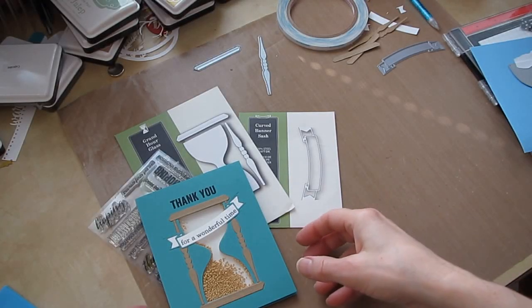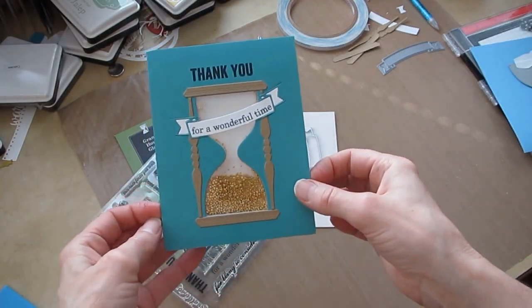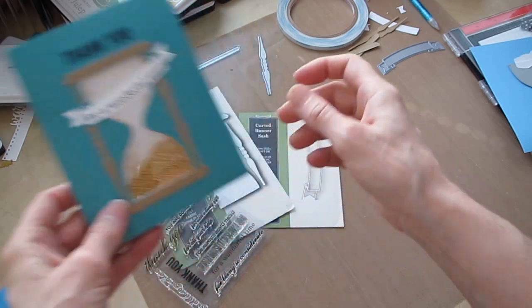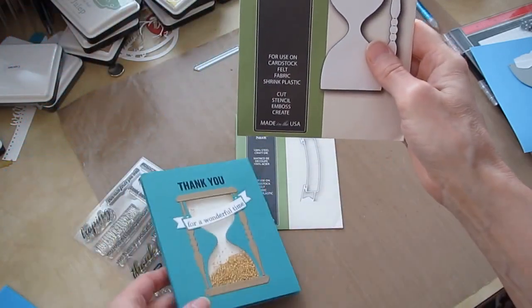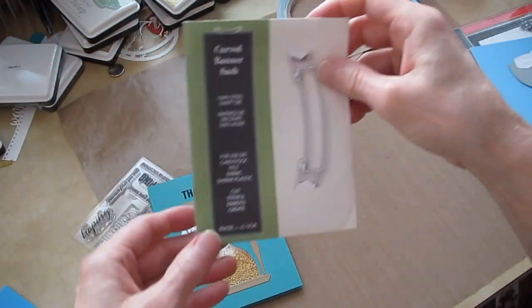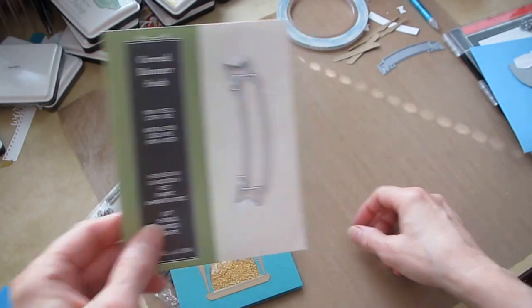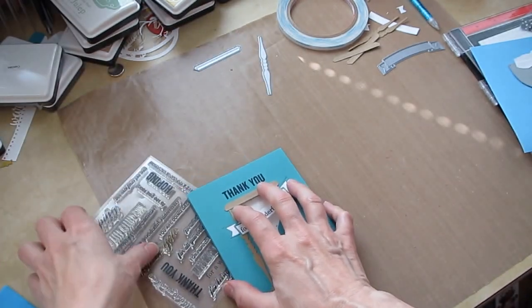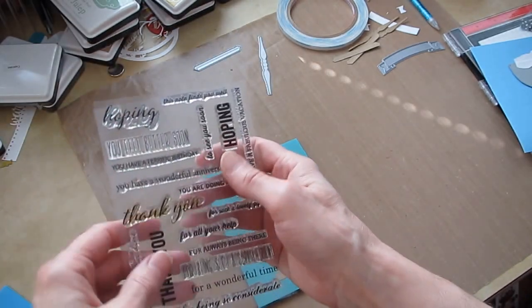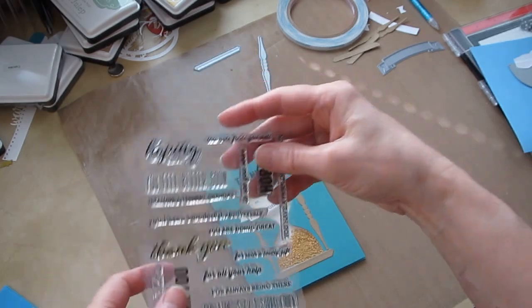Hi everyone. Today I want to show you how I made this shaker card with Poppy Stamps Grand Hourglass die, Poppy Stamps Curved Banner Sash, and this Memory Box stamp set Hope and Thanks.